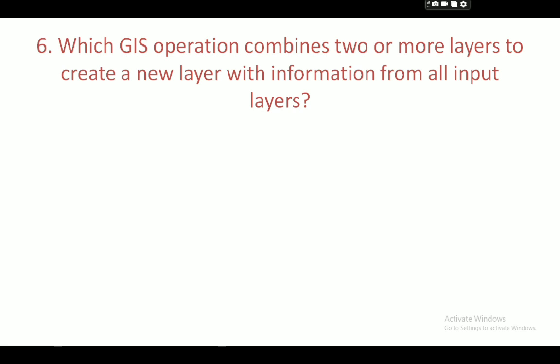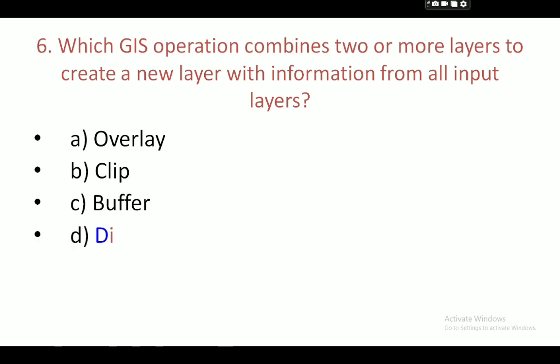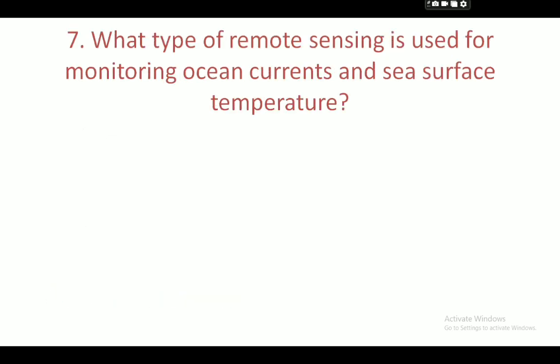Next question: which GIS operation combines two or more layers to create a new layer with information from all input layers? Your options are: overlay, clip, buffer, and dissolve. Your correct answer is overlay.